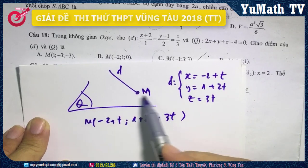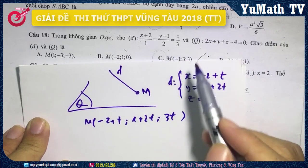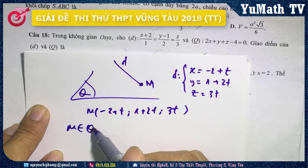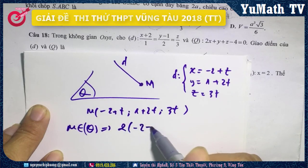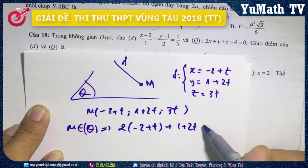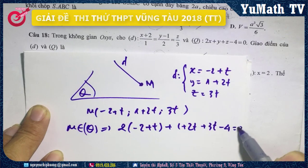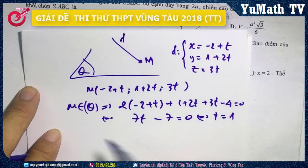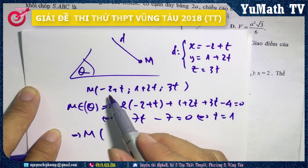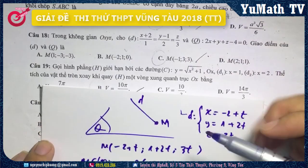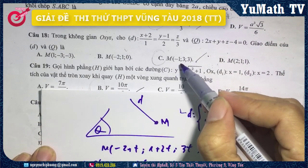Thế tọa độ M vào phương trình mặt phẳng (Q): 2(-2+T) + (1+2T) + 3T - 4 = 0, rút gọn được 7T - 7 = 0, suy ra T = 1. Thế T = 1 vào tọa độ M: M = (-1, 3, 3). Mình chọn đáp án C.